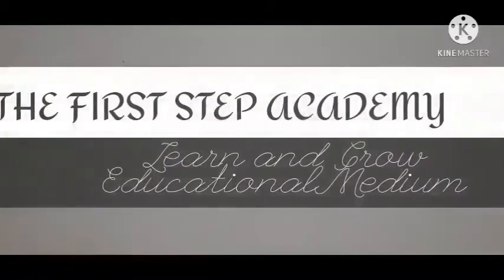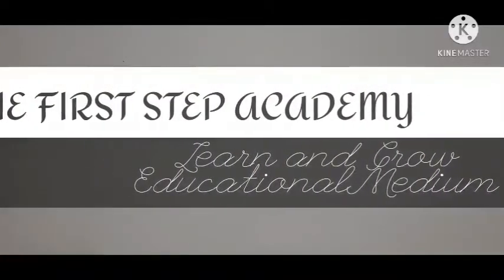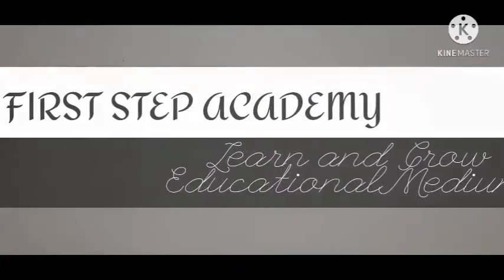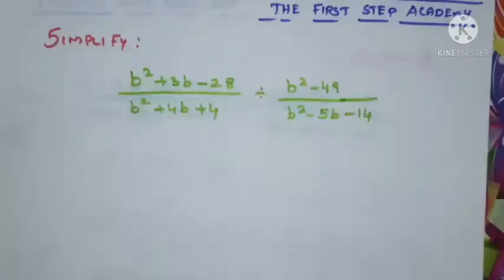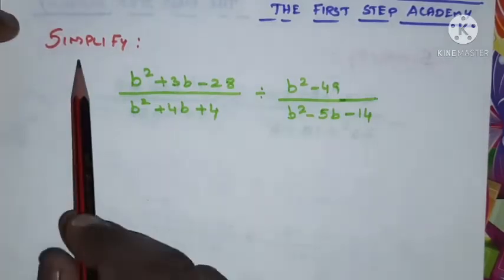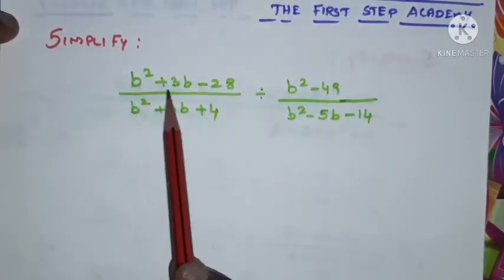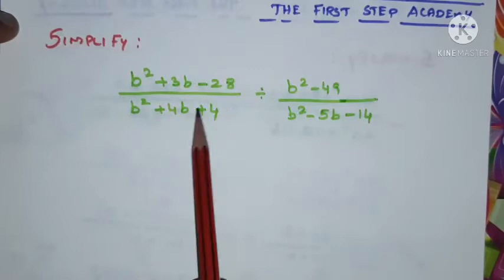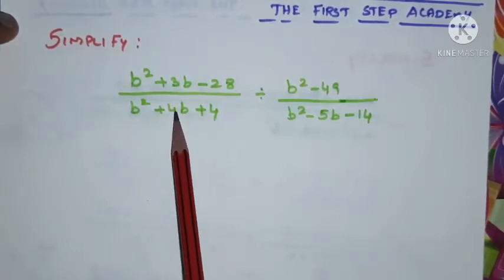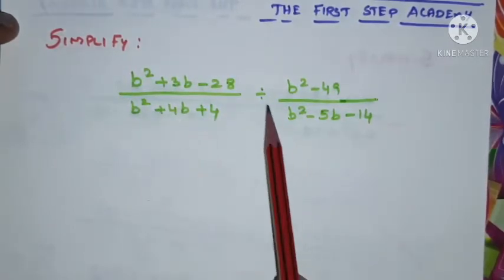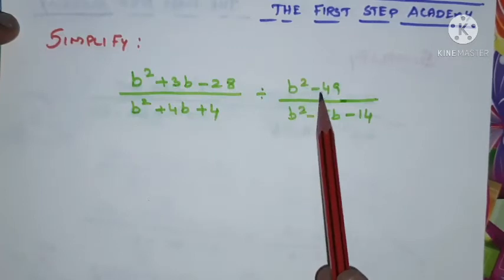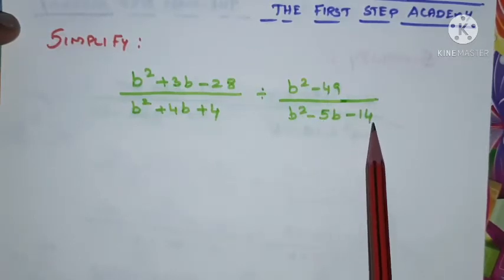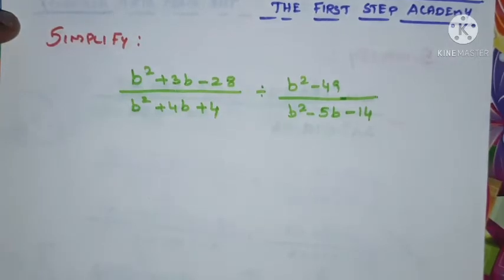Welcome to the First Step Academy, learn and grow educational medium. The given problem is: simplify b squared plus 3b minus 28, divided by b squared plus 4b plus 4, divided by b squared minus 49, divided by b squared minus 5b minus 14. We need to simplify this problem.